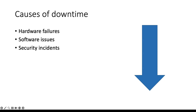Then we've got human error — mistakes made by your end users, your admins, or people in your IT team. We're talking about things like misconfiguration or configuration creep, and improper software installations, which can contribute to system downtime.